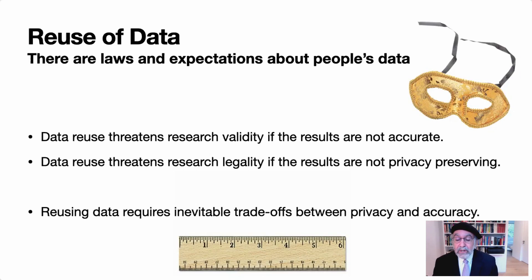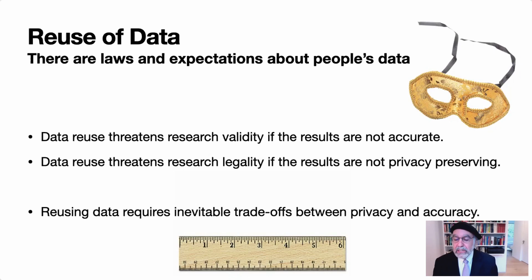Everyone who's ever tried to anonymize a data set knows there's a tradeoff between privacy and accuracy. The two most important considerations are that data reuse threatens research validity if results are not privacy-preserving. And one of my messages is that it's not just difficult — mathematically speaking, it's really impossible to anonymize a data set in any useful way.